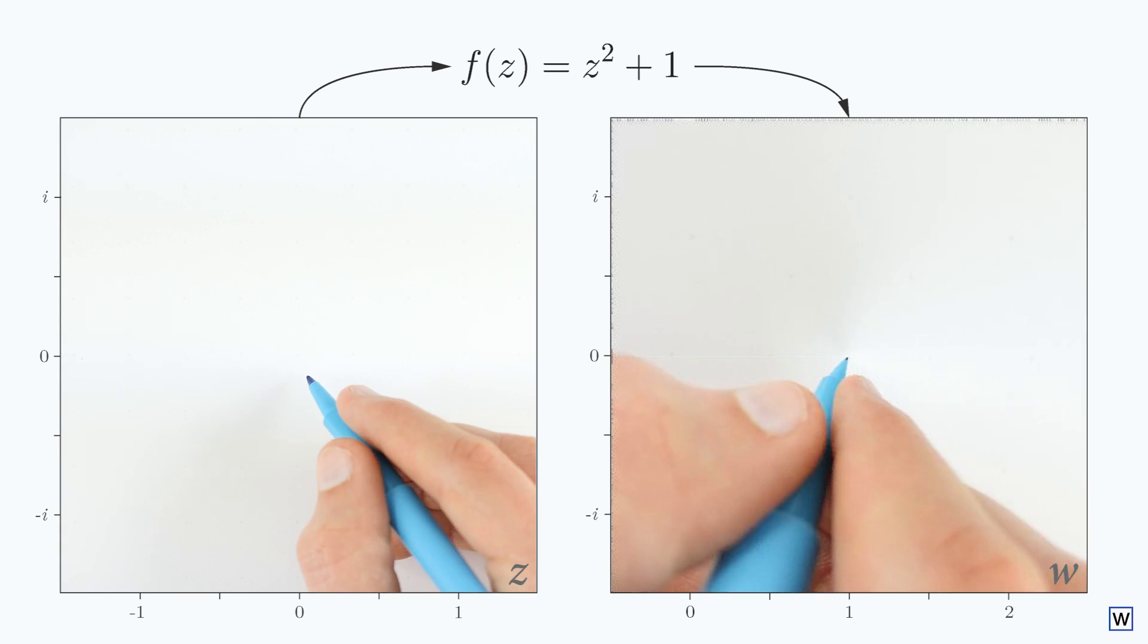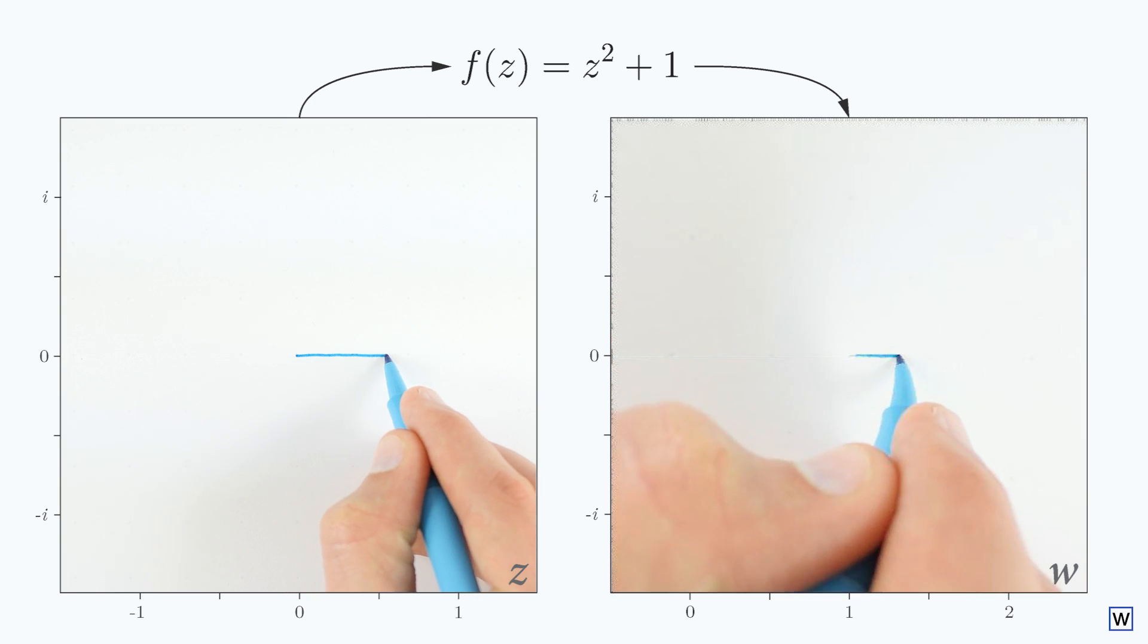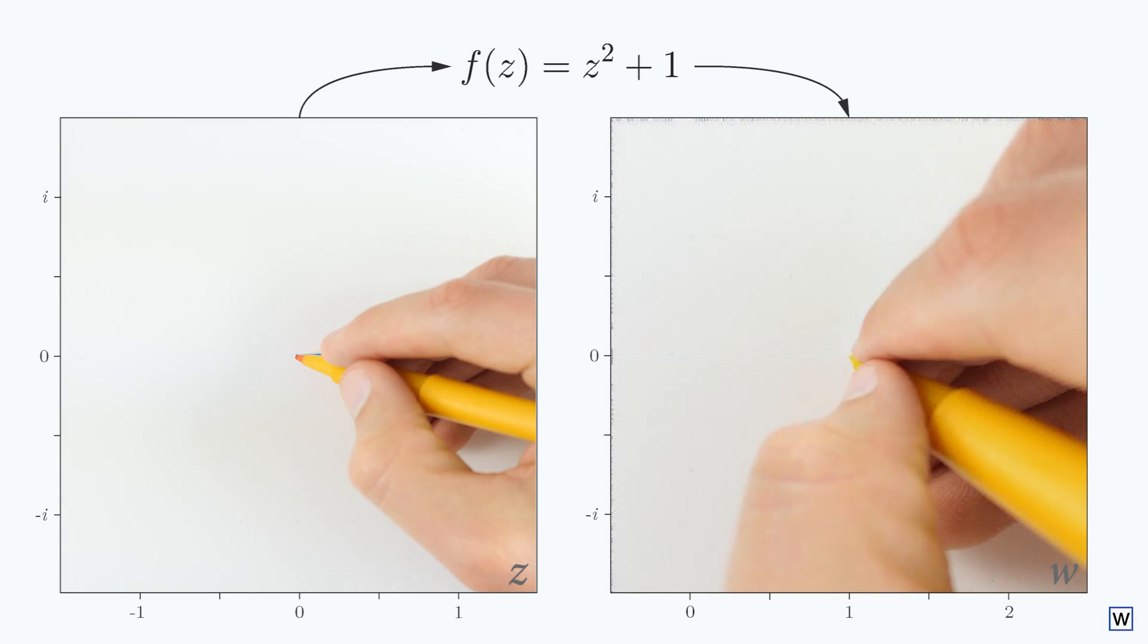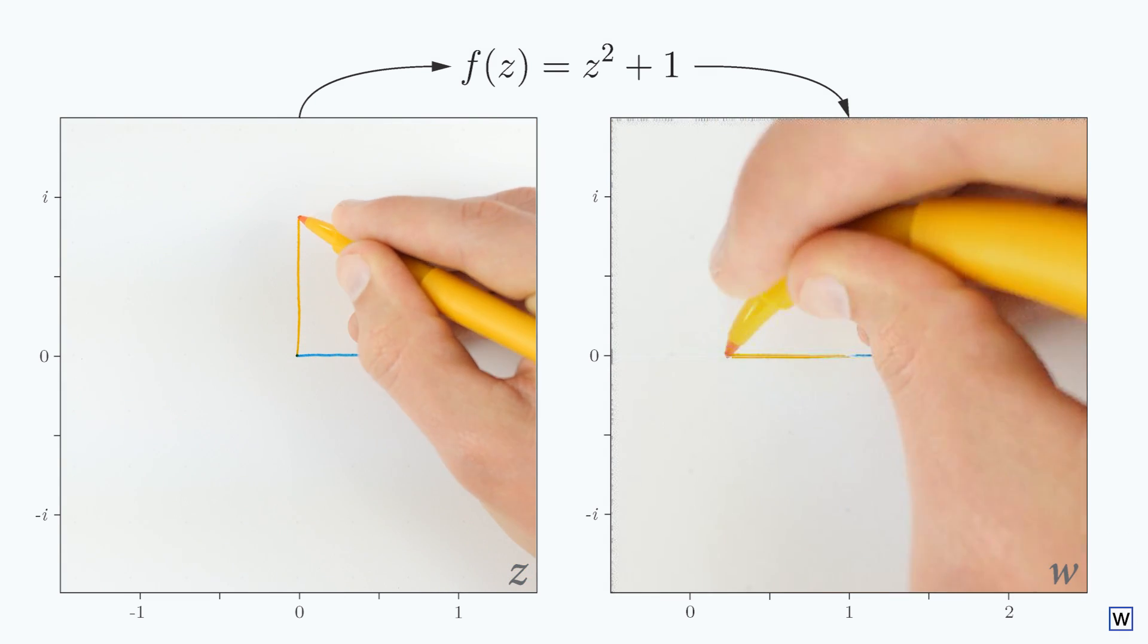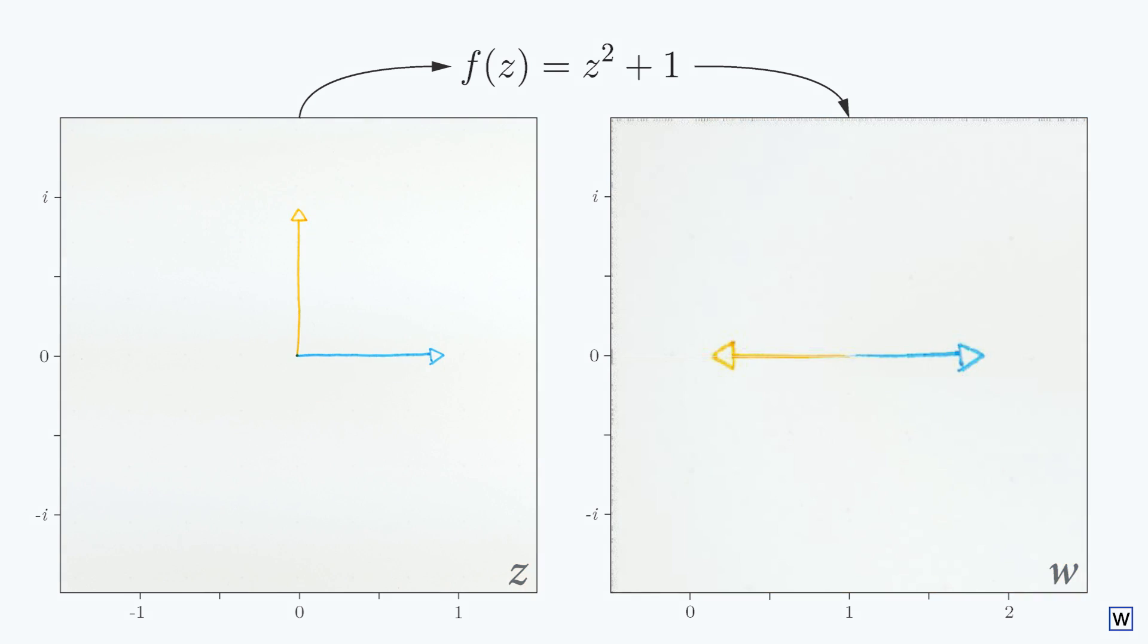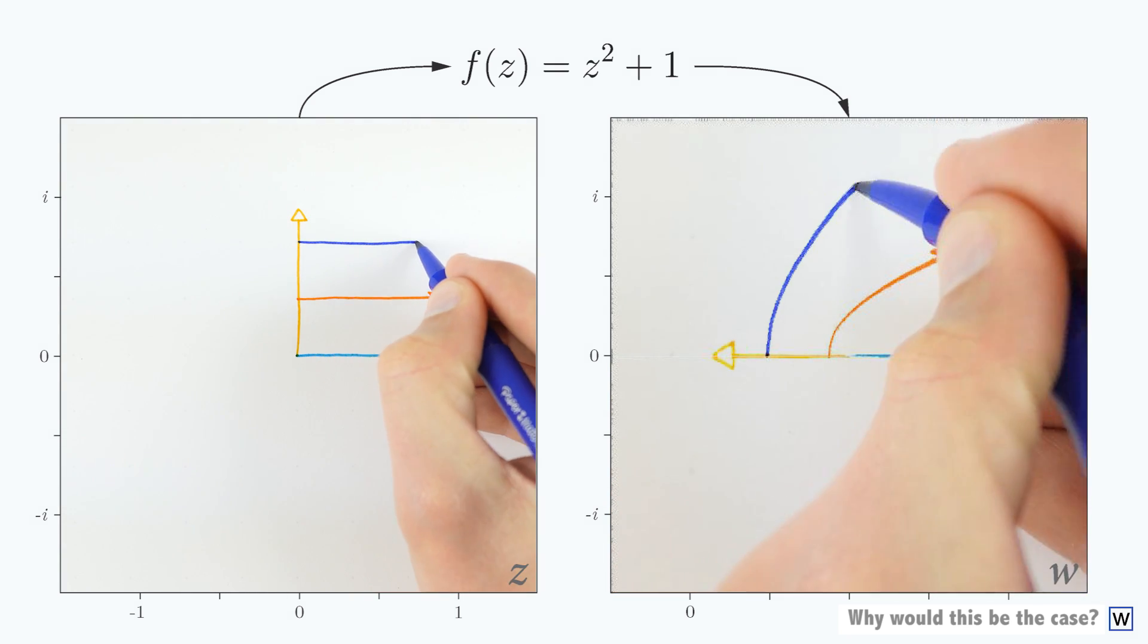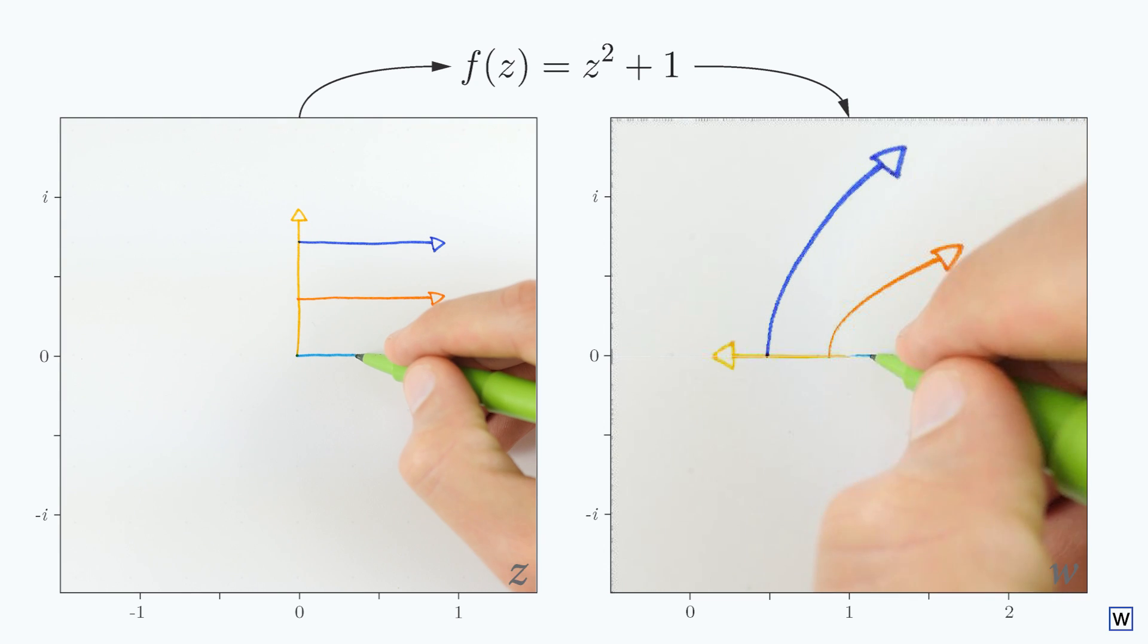Let's start by drawing some simple lines. A horizontal line along the positive x axis turns out to be something pretty similar in our output space. But what about a line along the positive imaginary axis? This line appears to have been rotated. As we add more lines, we begin to see a pattern.